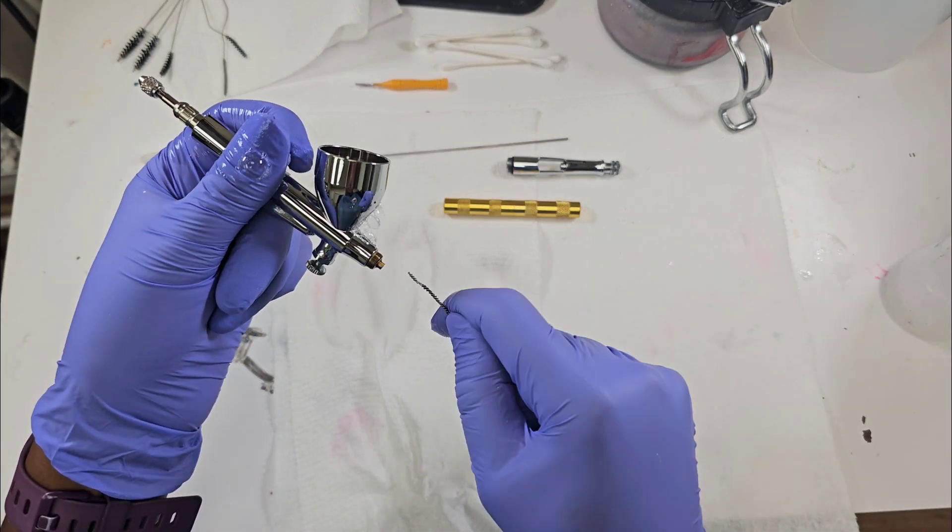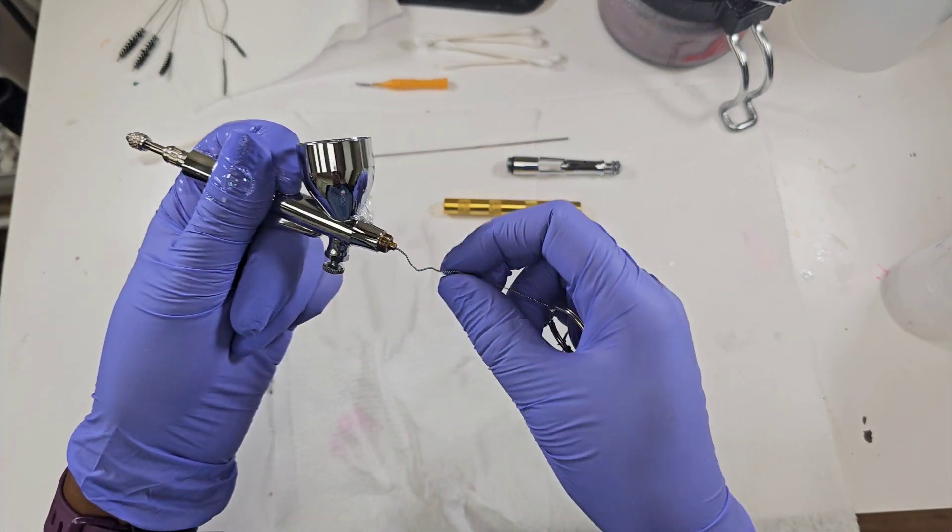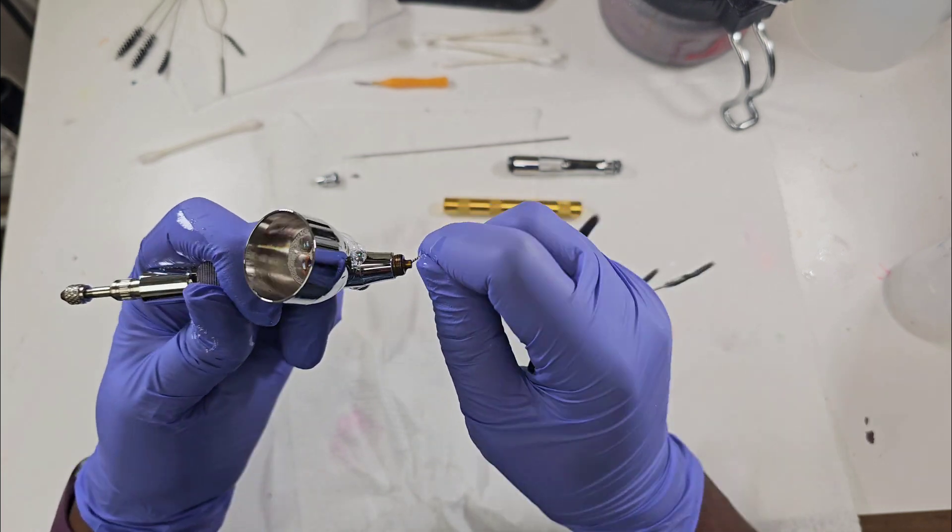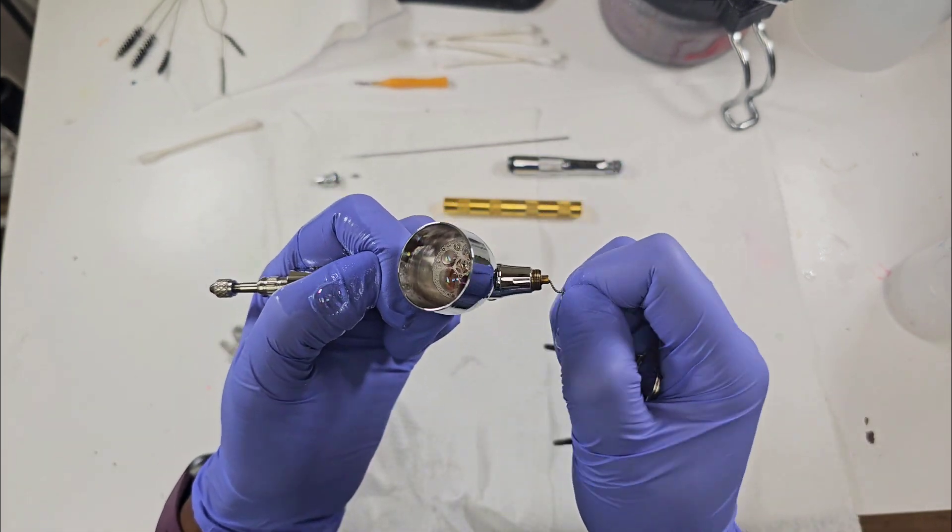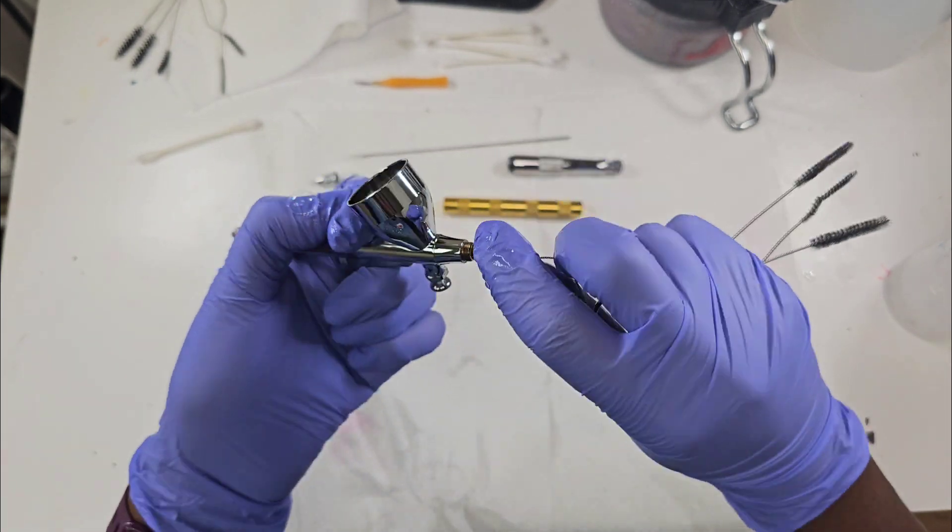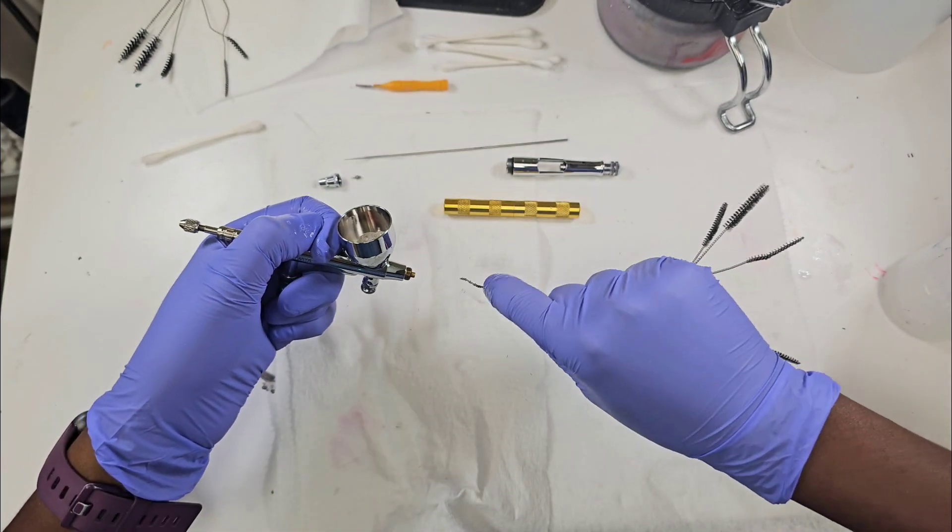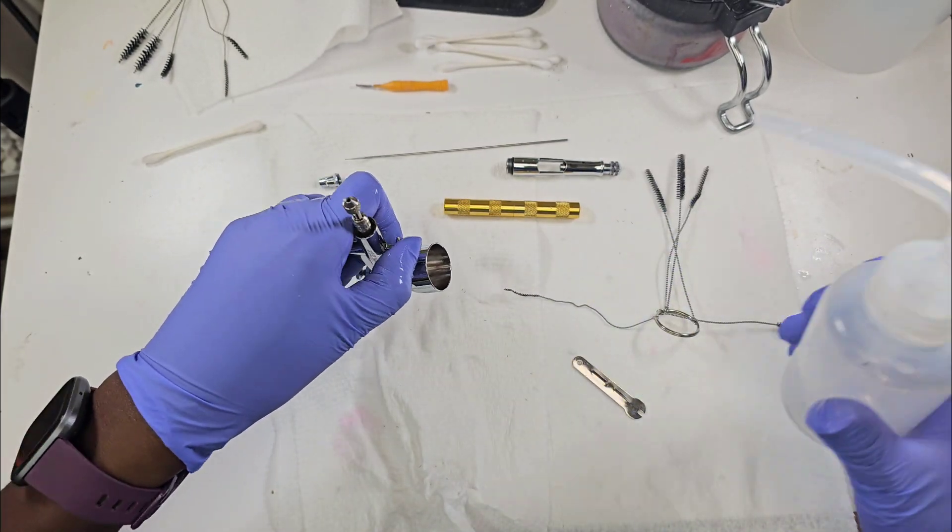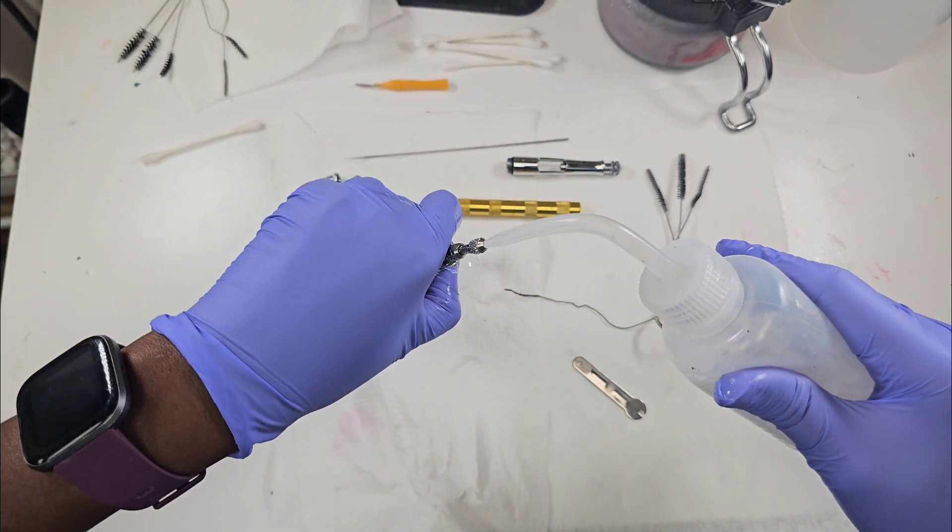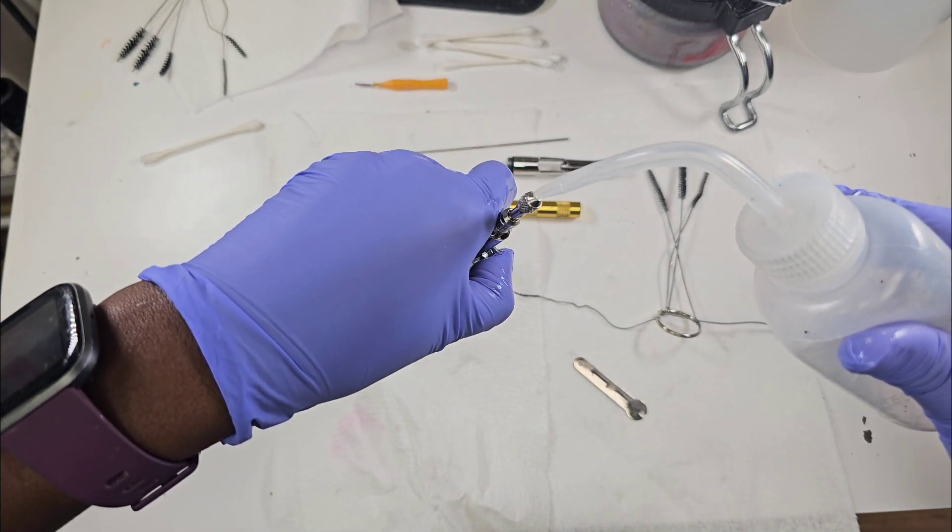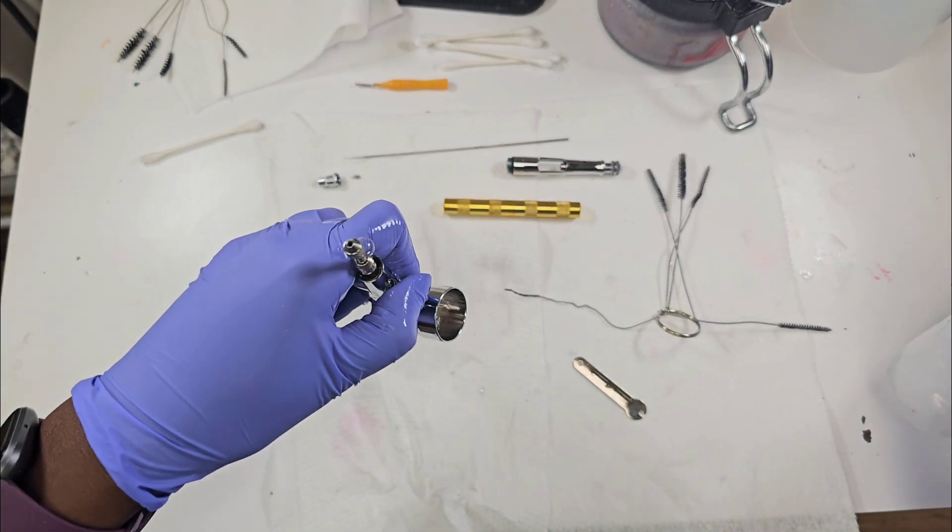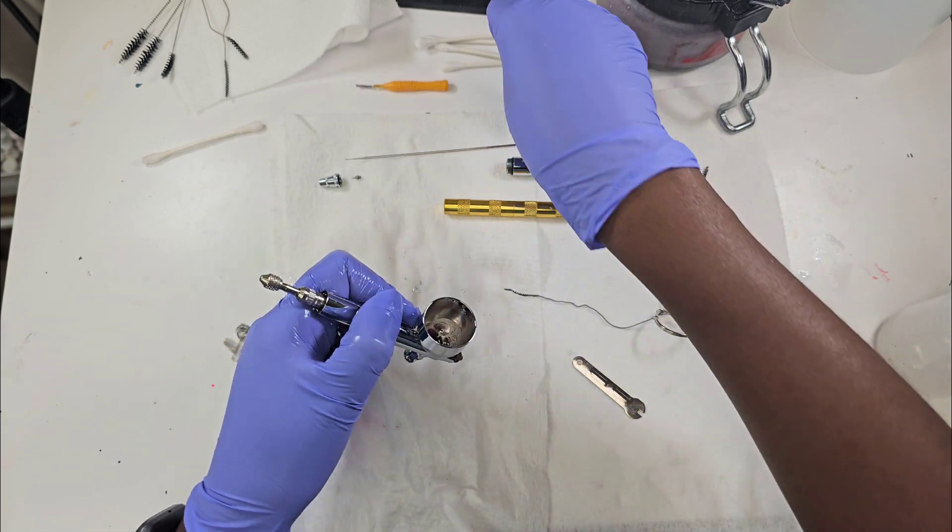Use your little pipe cleaner pieces to wiggle it around in there. What I'm doing is threading it back through the body, so it's actually going into that body barrel piece. Then I'm going to turn it and see if any paint comes out. I probably replace these little pipe cleaner things every three or four months depending on how ready they get.